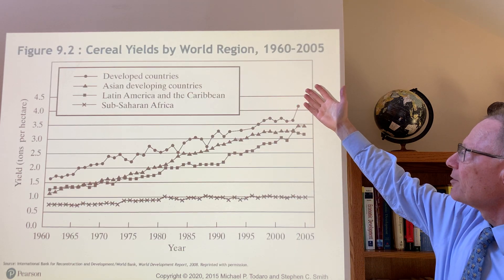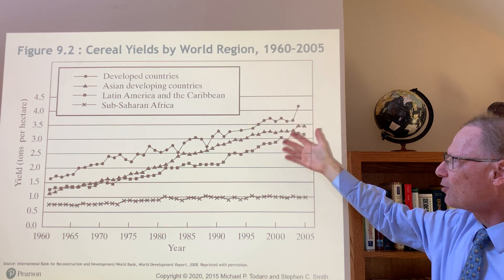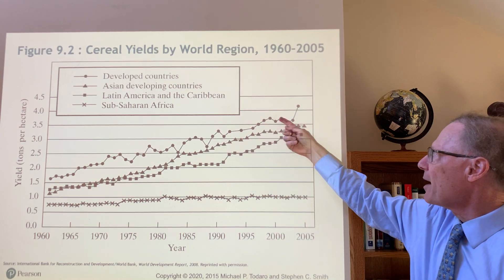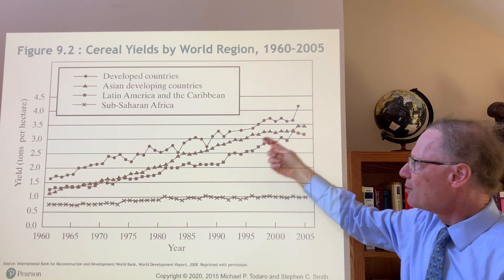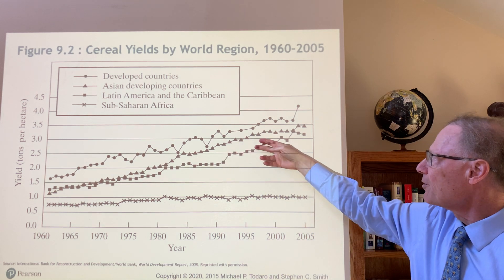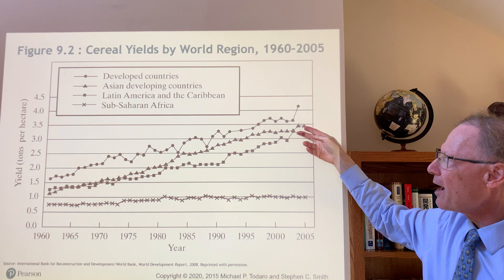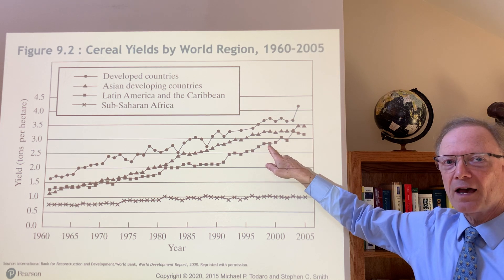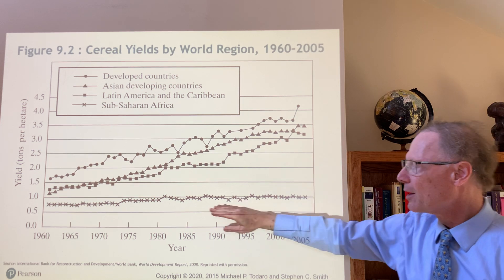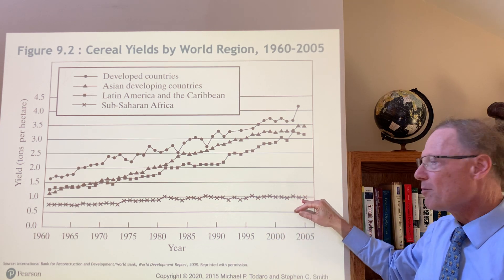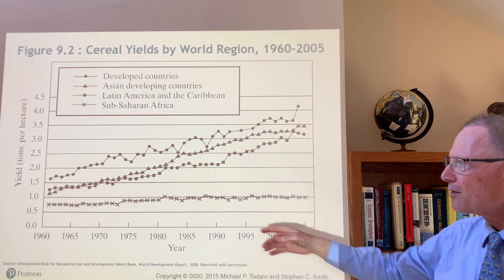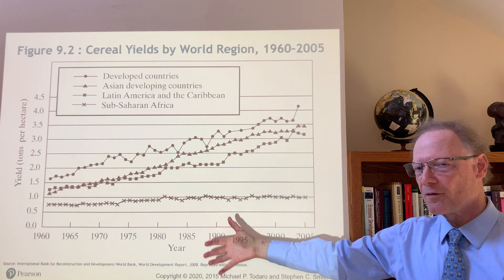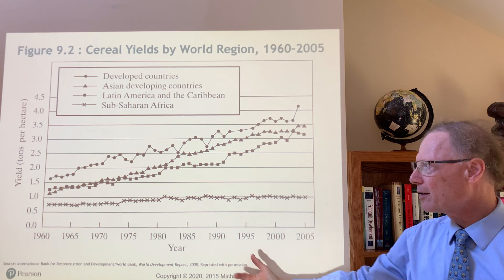Here we have World Bank estimates of grain yields across different developing regions from 1960 to 2005. We see rather dramatic gains in the developed countries in this period, and also very rapid gains and a catch-up process — though with a lag — on the part of Asian developing countries and countries in Latin America and the Caribbean. African productivity has grown much more slowly. The y-axis shows yield defined as tons per hectare.